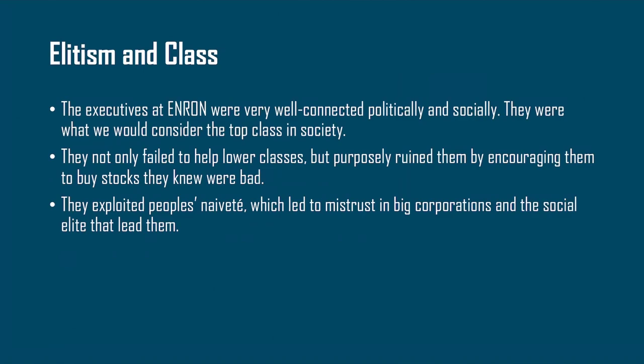Elitism and class is another important theme. The executives at Enron were very well connected politically and very high-ranking from a social perspective — what we would consider the top class in society. They not only failed to help the lower classes, but purposely ruined them by encouraging them to buy up stocks they knew were bad. They exploited people's naivety, which led to a real mistrust in large corporations and the social elite that lead them.